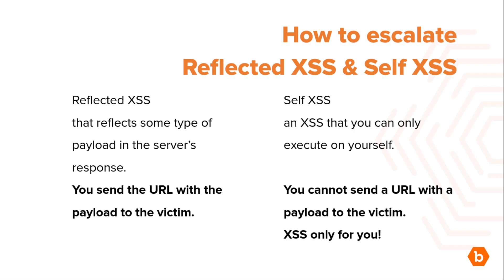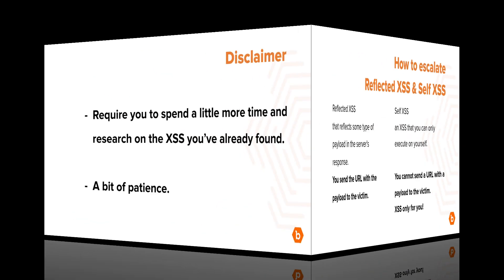Self-XSS, on the other hand, is an XSS that you can only execute on yourself. It can happen in many ways. For example, you might upload data into your user profile that triggers XSS, but no one else can access it. You also can't make a victim upload that type of data — you can only load it for yourself. That's why it's called self-XSS. Although you could convince a victim to upload it using social engineering, we know that's out of scope for bug bounty programs. This issue is usually considered informative.